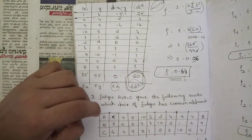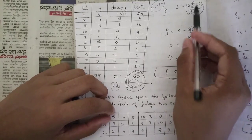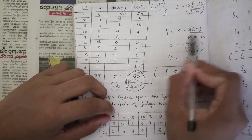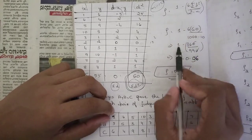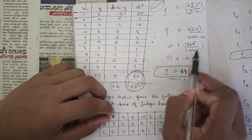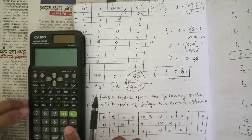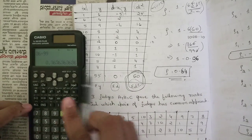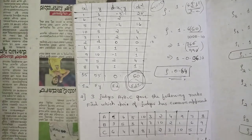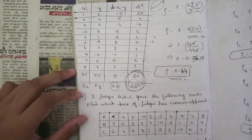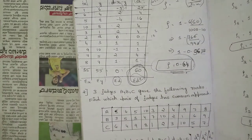Now substitute into the rank correlation formula: r = 1 − (6 × summation d²) / (n³ − n). Substituting summation d² = 60 and n = 10: r = 1 − (6 × 60) / (1000 − 10) = 1 − 360/990. Simplifying: 1 − 36/99 = 1 − 0.3636 = 0.64. So the rank correlation is 0.64.